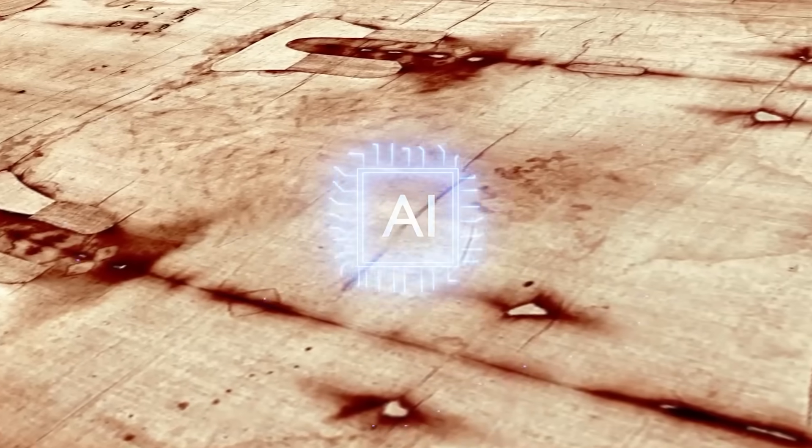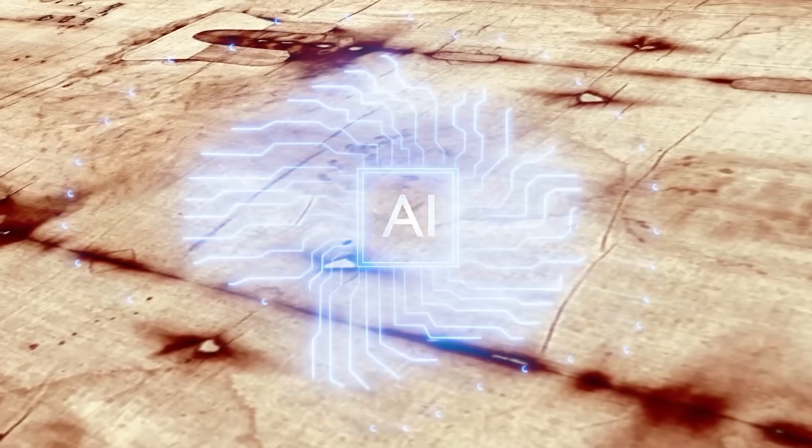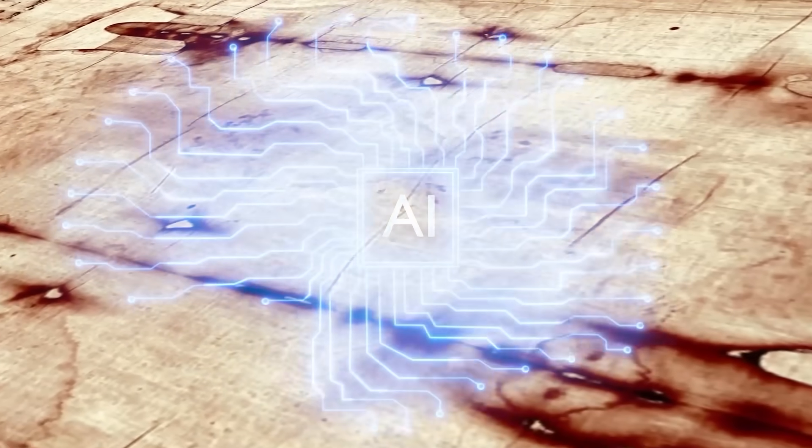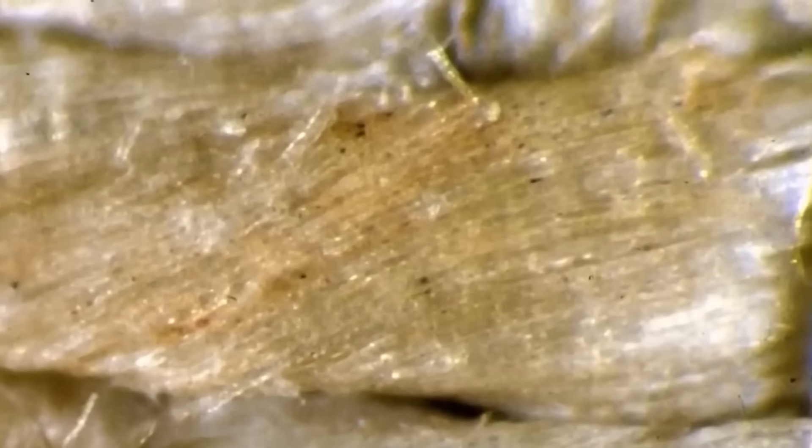Deep inside a supercomputer, lines of code scroll past as an AI analyzes millions of data points from a single object, the shroud of Turin. It isn't looking for a face or stains. It's hunting for order in the chaos of ancient fibers.